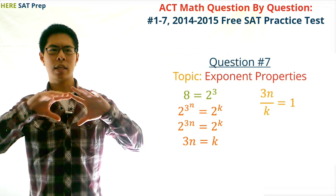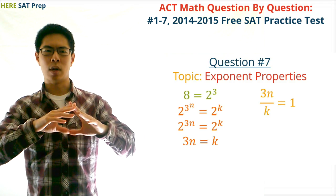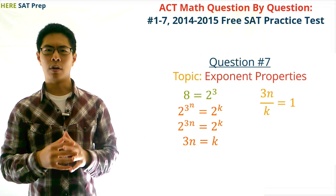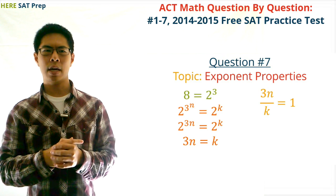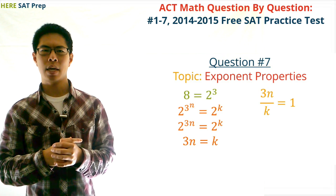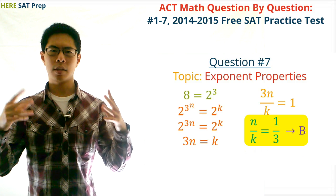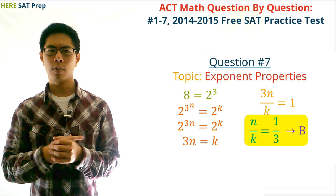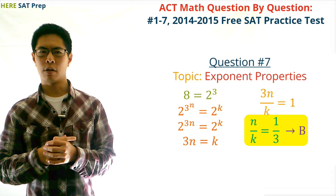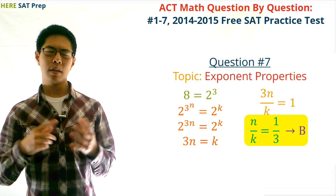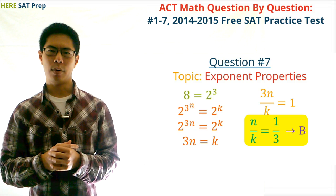Finally, we need to get n over k on one side. We divide both sides by k, giving us 3n over k equals 1. Then we divide both sides by 3 to get n over k equals 1 over 3. So our answer is B, 1 over 3.